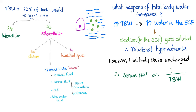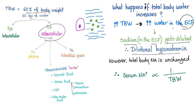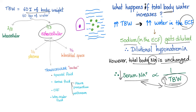What happens if total body water increases? Water in the ECF will increase because ECF is the main part of total body water. Sodium in the ECF gets diluted — there is dilutional hyponatremia. It's not a true hyponatremia; it's dilutional. There is relatively less sodium in the plasma, but the total body sodium is normal. Total body water increased, so serum sodium gets diluted. There is an inverse relationship between them: serum sodium is inversely proportional to total body water.